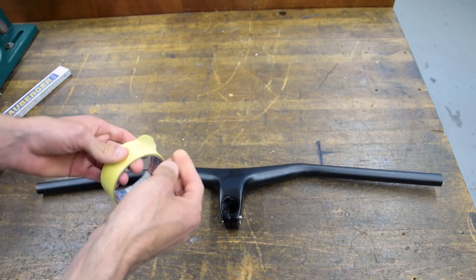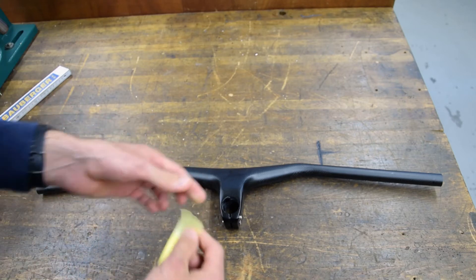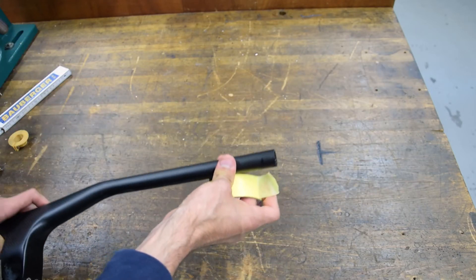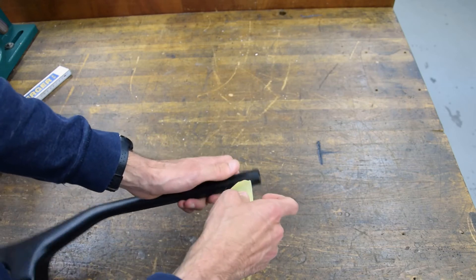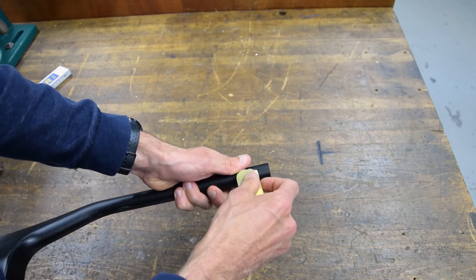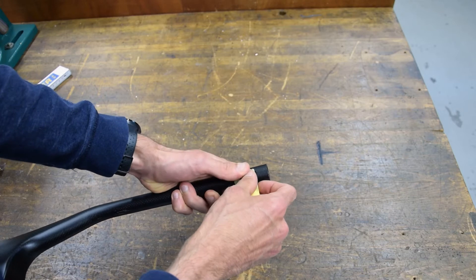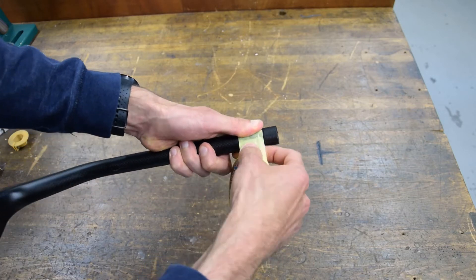So what I usually do first is I use some tape so that the carbon doesn't delaminate at the cut. So what we do is I marked where we should cut the bars.